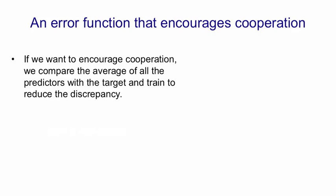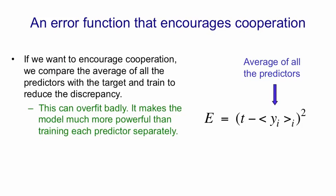So if you want to encourage cooperation, what you should do is compare the average of all the predictors with the target, and train all the predictors together to reduce the difference between the target and their average. So using angle brackets for expectations again, the error would be the difference between the target and the average over all the predictors of what they predict. That will overfit badly. It will make the model much more powerful than training each predictor separately, because the models will learn to fix up the errors that other models make.